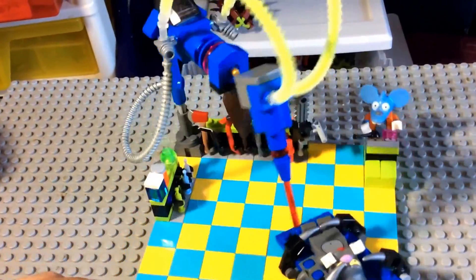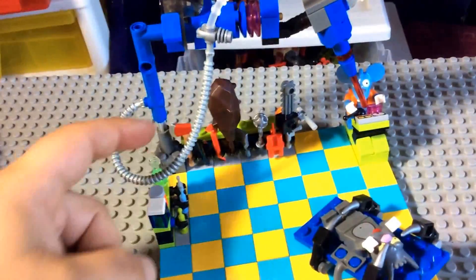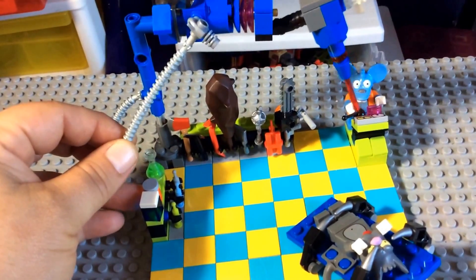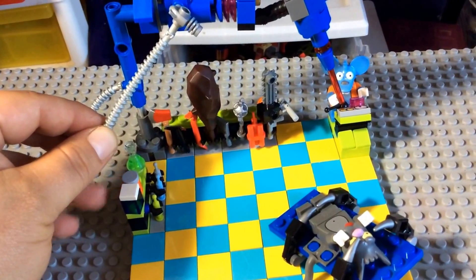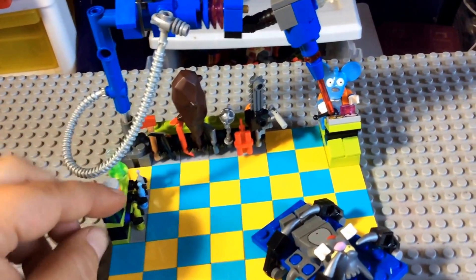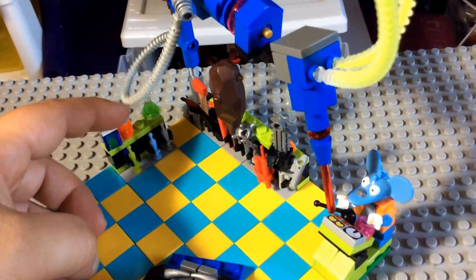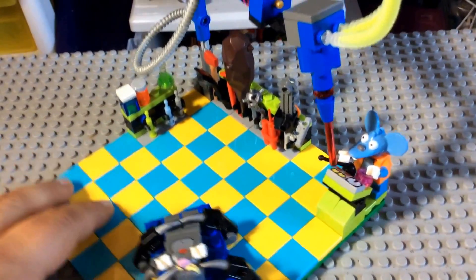Back here is a row of torture devices that Itchy can use on Scratchy, and here is a rack of medicine and shots and stuff, weird pills and acid that he can also use on Scratchy.